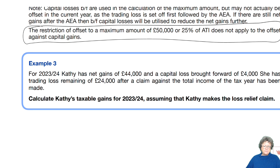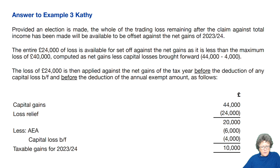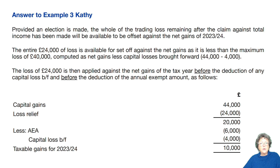Example number three: this is Cathy. She has gains in 23-24 of £44,000, a loss brought forward of £4,000, and a remaining trade loss of £24,000 after a claim against total income for the tax year has been made. We are to calculate her taxable gains for 23-24. The model answer reads: provided an election is made, the whole of the trade loss remaining after the claim against total income has been made will be available — so that's the rule. You've done an income tax claim in the current year and now you can bring the balance forward into capital gains.